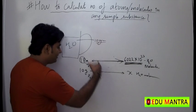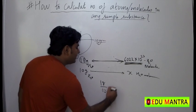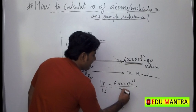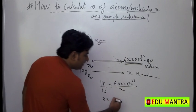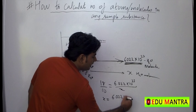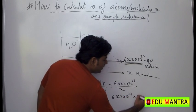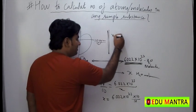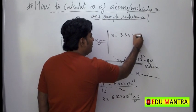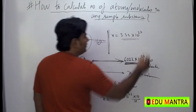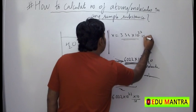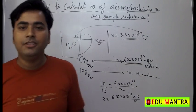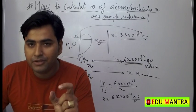18 grams corresponds to 6.022 × 10²³ water molecules, so: 18 / 10 = 6.022 × 10²³ / x. Solving: x = 6.022 × 10²³ × (10 / 18), which gives x = 3.34 × 10²³. That is the number of water molecules contained in this cup.